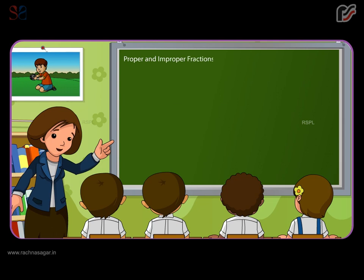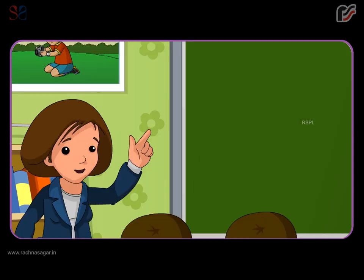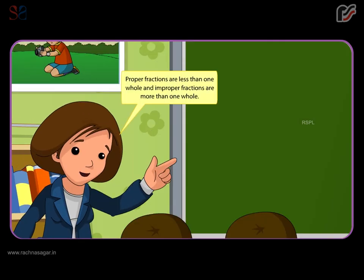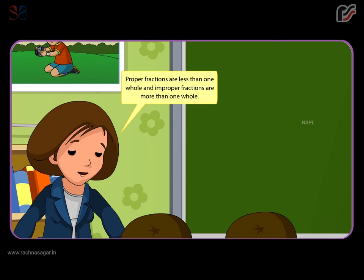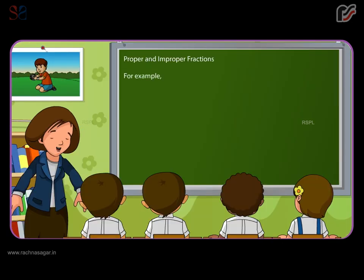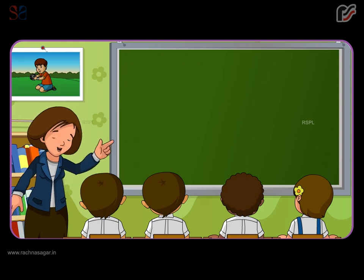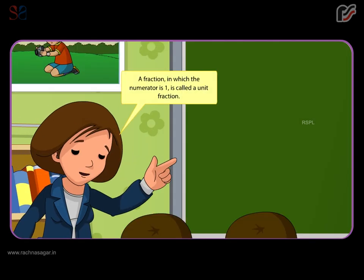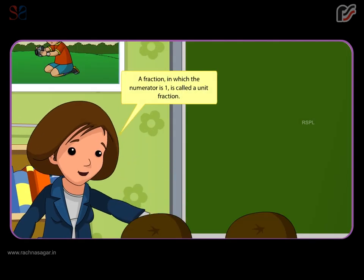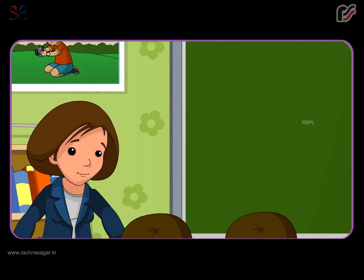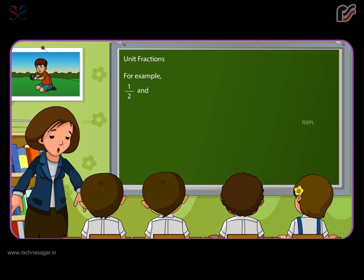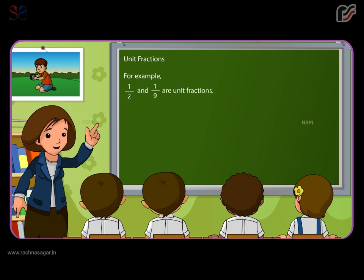Proper and improper fractions. Proper fractions are less than one whole and improper fractions are more than one whole. For example, nine by ten is a proper fraction and ten by nine is an improper fraction. Unit fractions: a fraction in which the numerator is one is called a unit fraction. For example, one by two and one by nine are unit fractions.